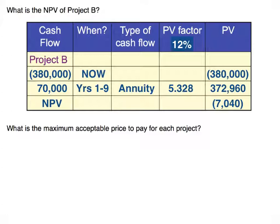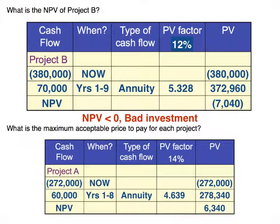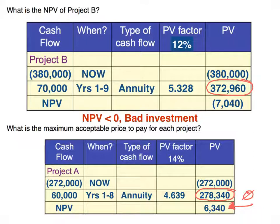The next question is: what is the maximum acceptable price you'd be willing to pay for each project? For Project A, which had a positive net present value, I would be willing to pay up to $278,340 because at that capital outlay, net present value would be zero. For Project B, I would only be willing to pay up to $372,960 because at that point, net present value would be zero and I'd be getting my required rate of return.